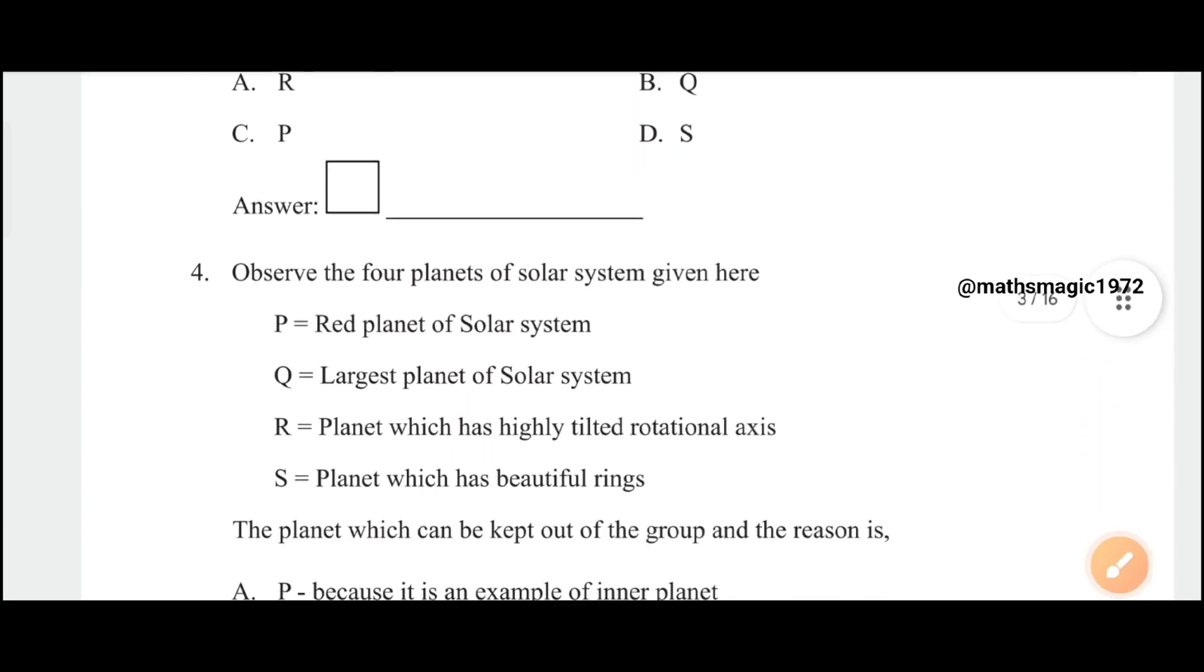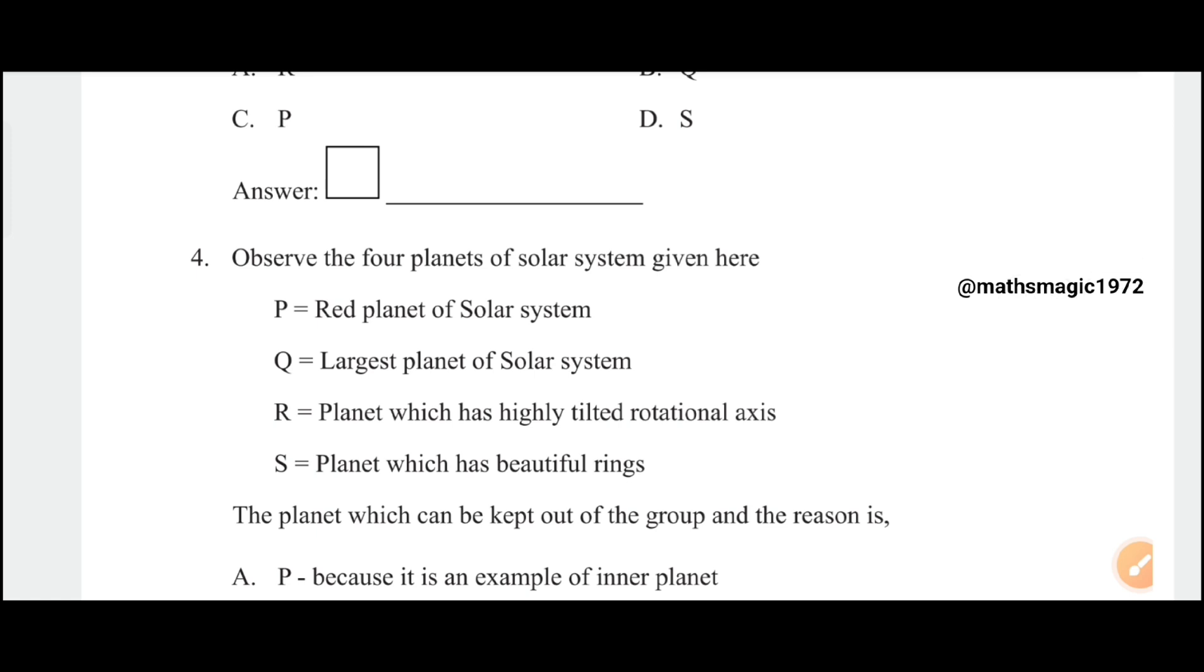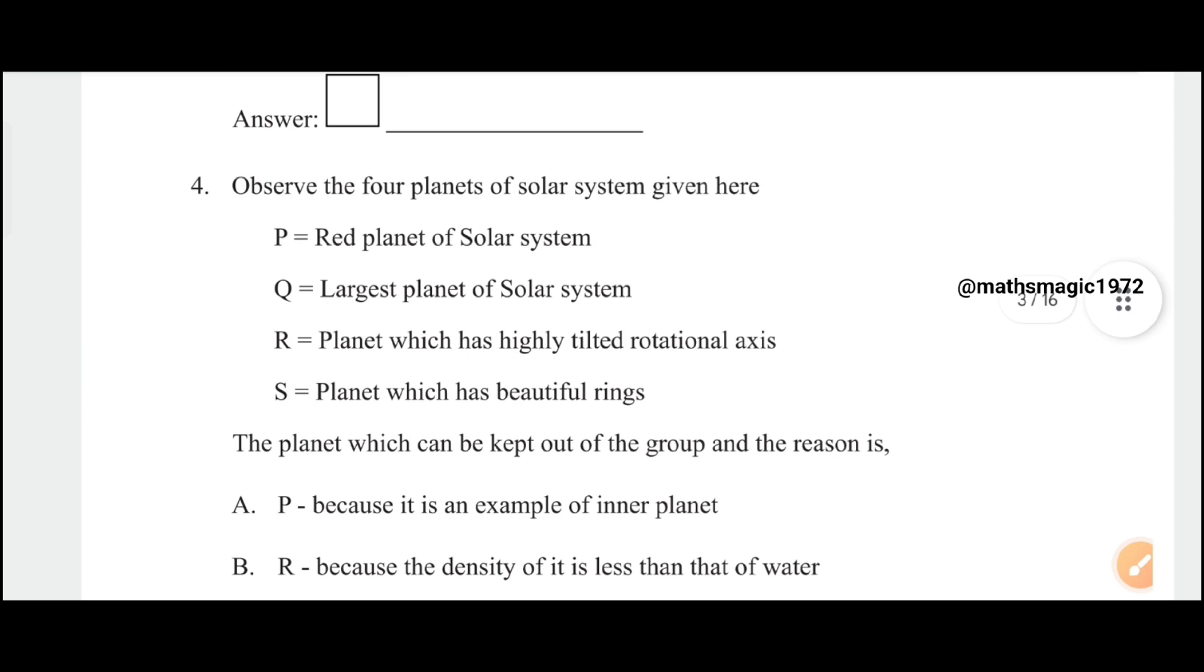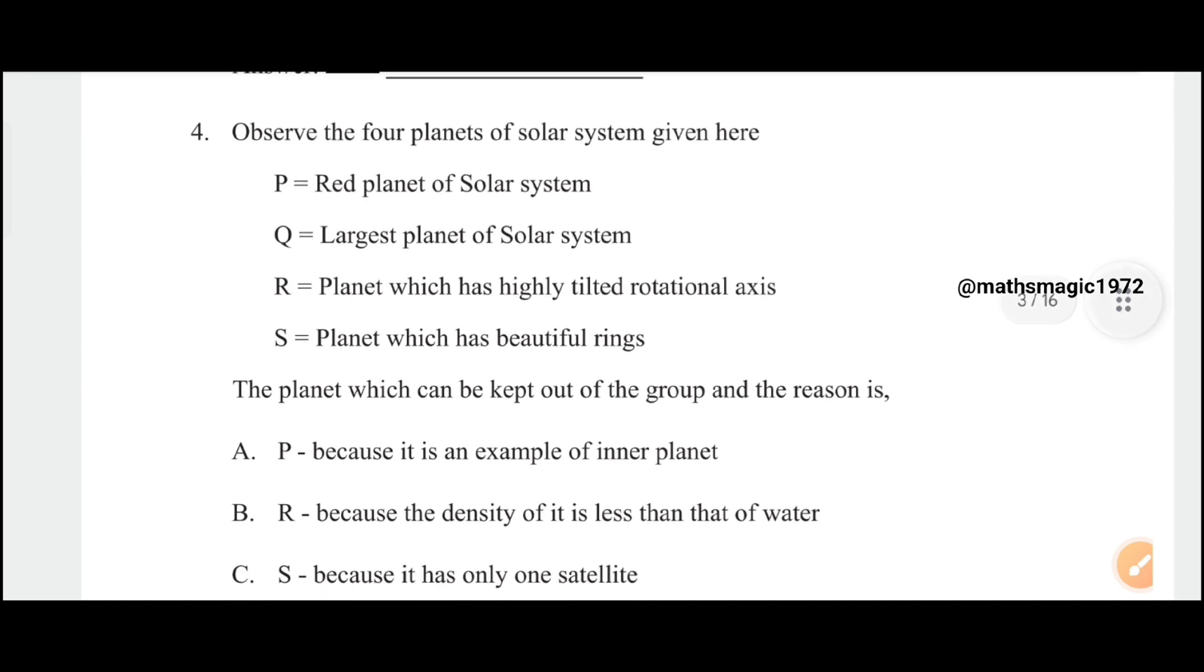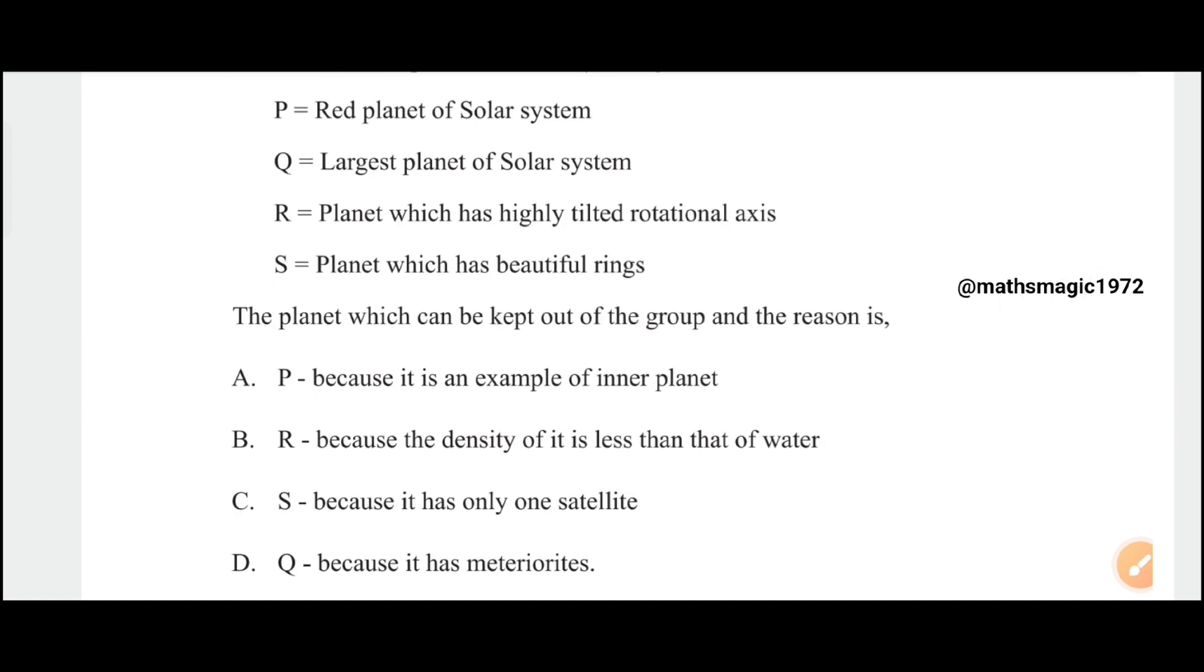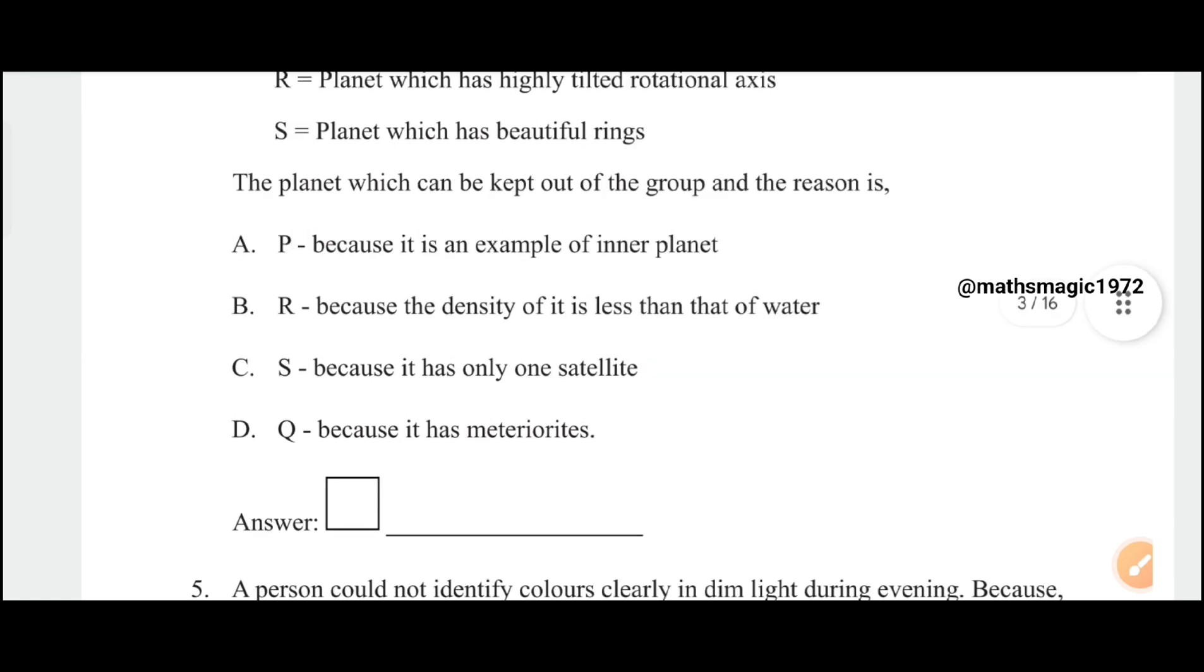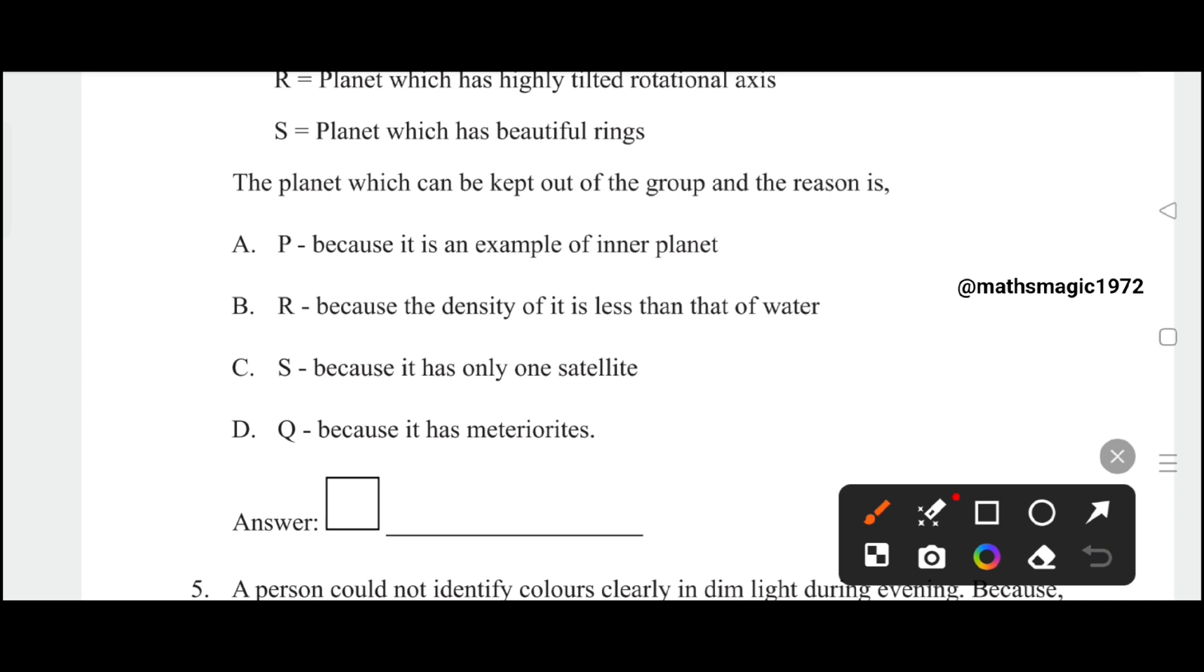Observe the four planets of the solar system given here. P is the red planet, Q is the largest planet, R is the planet which has highly tilted rotational axis, S is the planet which has beautiful rings. The planet which can be kept out of the group is option A, P, because it is an example of inner planet.